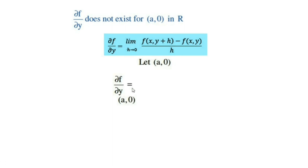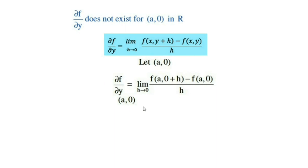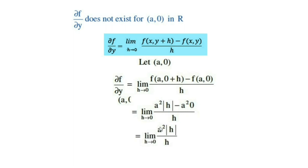According to the definition of ∂f/∂y at (a, 0): lim(h→0) [f(a, 0+h) - f(a, 0)] / h. Since f(x, y) = x²|y|, this becomes lim(h→0) [a²|h| - a²·0] / h = lim(h→0) a²|h| / h. Since |h| equals -h when h < 0 and +h when h > 0, the limit has two different values.